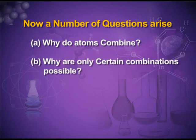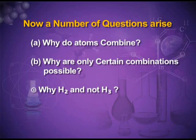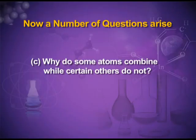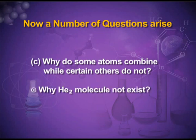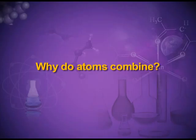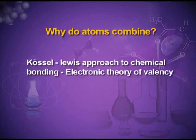There are many questions that arise from this. Why do atoms combine? Why are only certain combinations possible? For example, why do only two hydrogen atoms combine to form a hydrogen molecule — why H2 only, why not H3? Similarly, why do some atoms combine while certain others do not? We will study why such combinations take place. The Kossel-Lewis approach to chemical bonding is the electronic theory of valency.